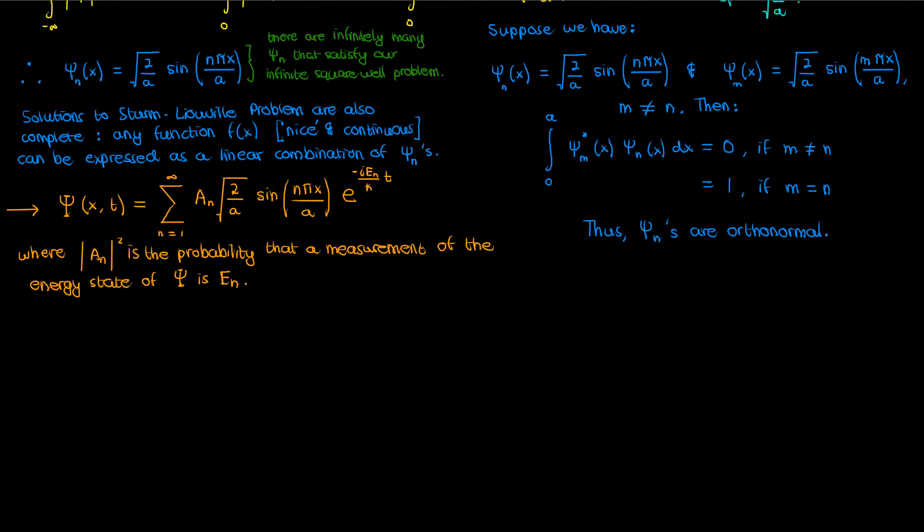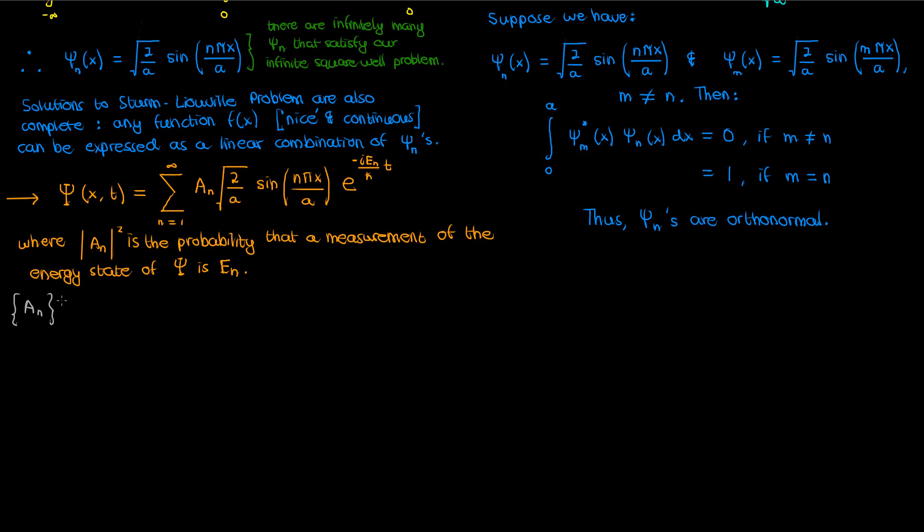But how do I find this A sub n? Well recall from the stationary states video that the A sub n's are found from the initial condition. So if my initial condition for the wave function is given by capital psi of x comma 0, then I can express this initial condition in terms of my infinite series of small psi n as follows.